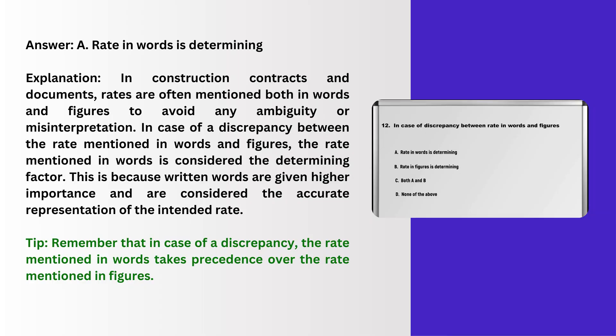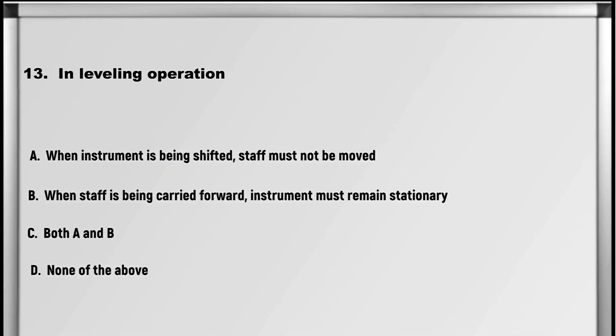Explanation: In construction contracts and documents, rates are often mentioned both in words and figures to avoid any ambiguity or misinterpretation. In case of a discrepancy between the rate mentioned in words and figures, the rate mentioned in words is considered the determining factor. This is because written words are given higher importance and are considered the accurate representation of the intended rate. Tip: in case of a discrepancy, the rate mentioned in words takes precedence over the rate mentioned in figures.